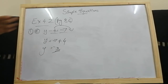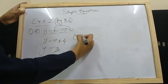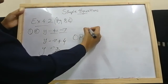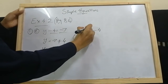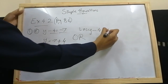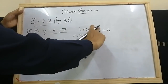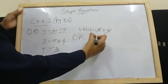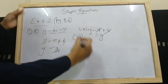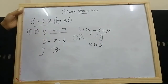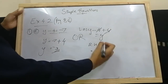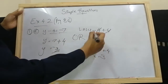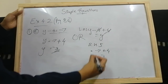Now the same question using the other method: y minus 4 is your LHS. Since it is minus, we add plus 4 to both sides. On LHS: minus 4 plus 4 equals 0, so only y remains. On RHS: minus 7 plus 4 equals minus 3. Therefore LHS equals RHS: y equals minus 3. You can use either method.